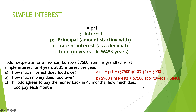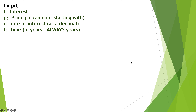If Todd agrees to pay the money back in 48 months, he has to pay back a total of $8,400 divided by 48 months, which equals $175 per month. That is a very standard simple interest question — it has two main parts and a third asking for the monthly payment.